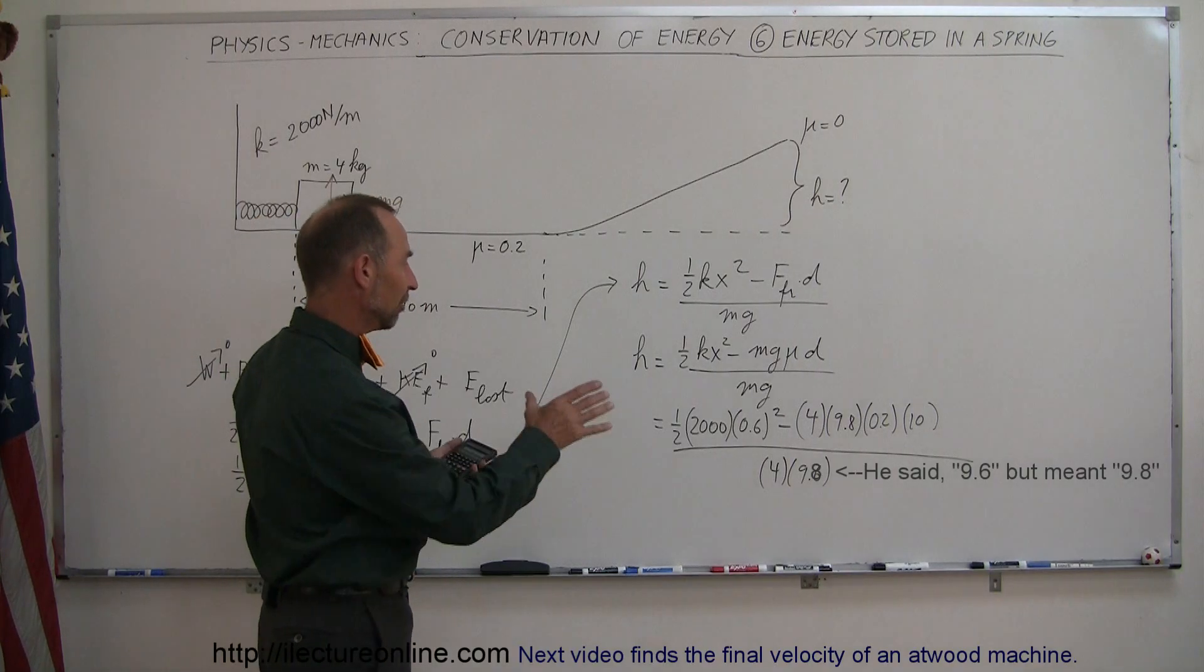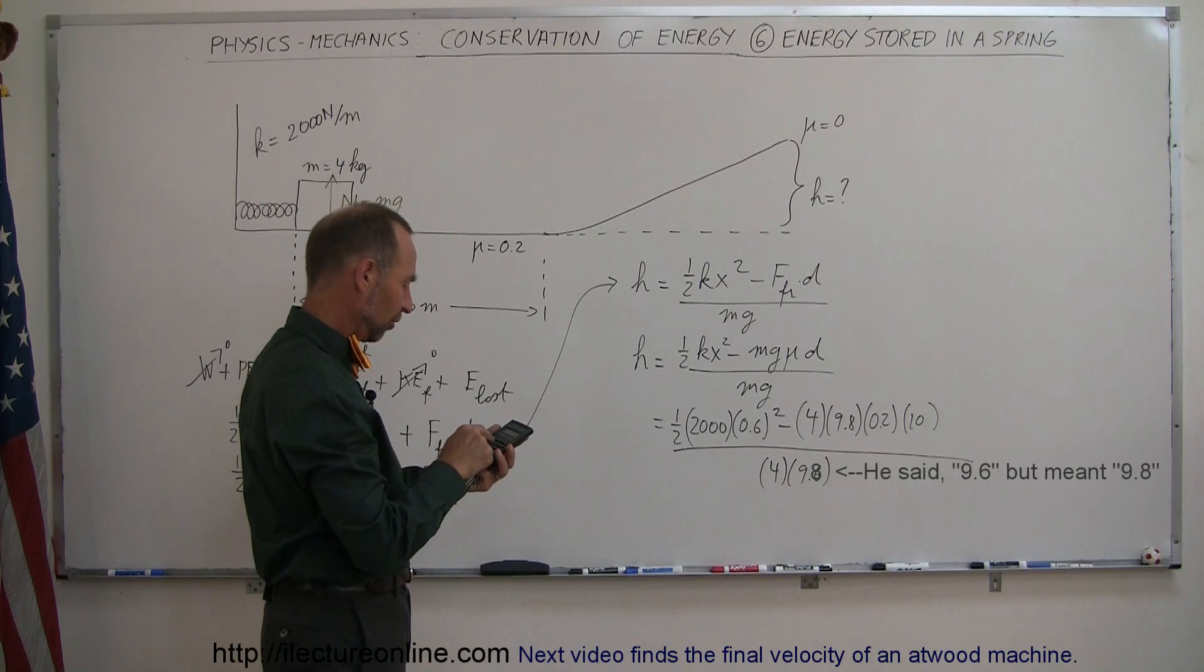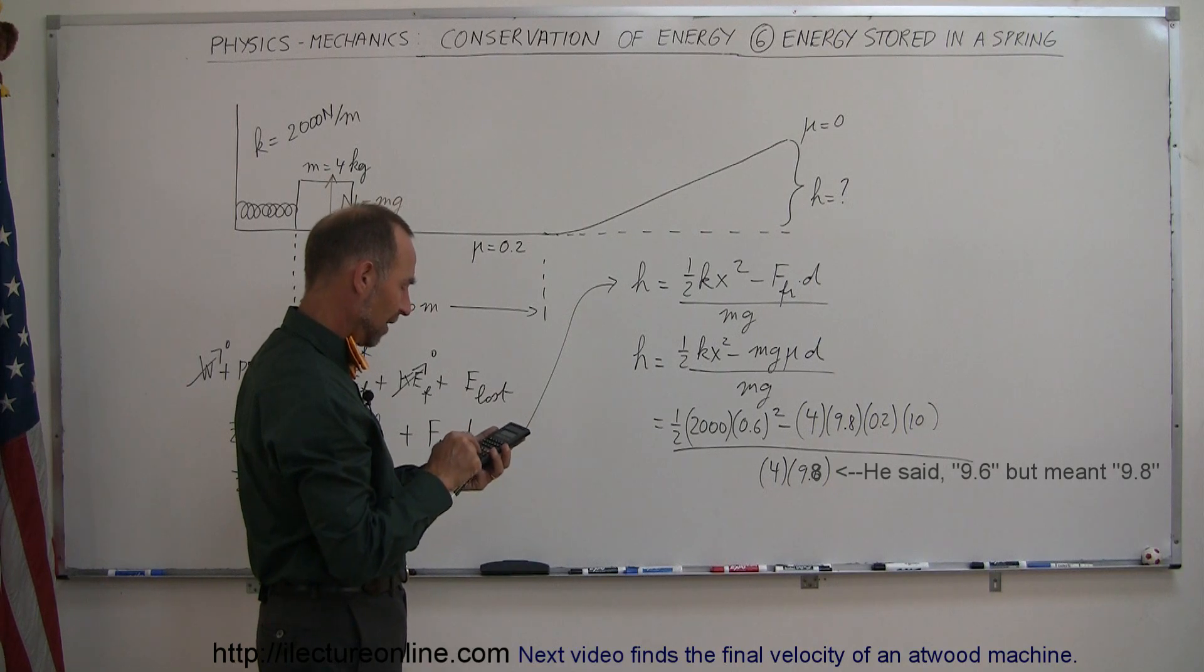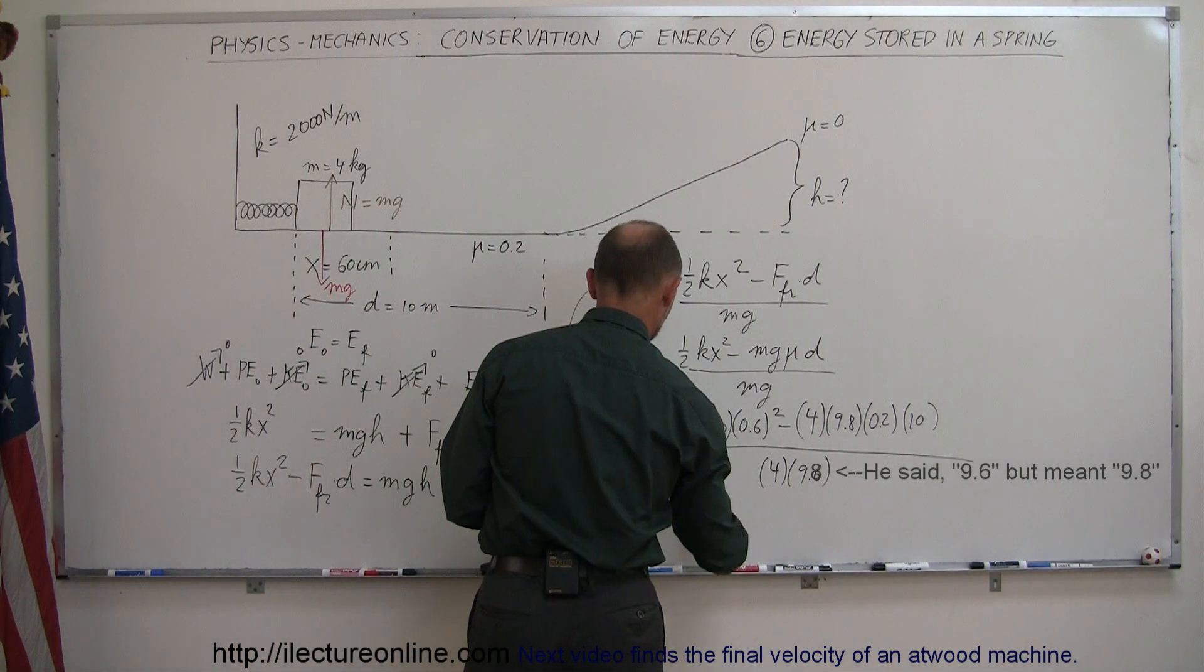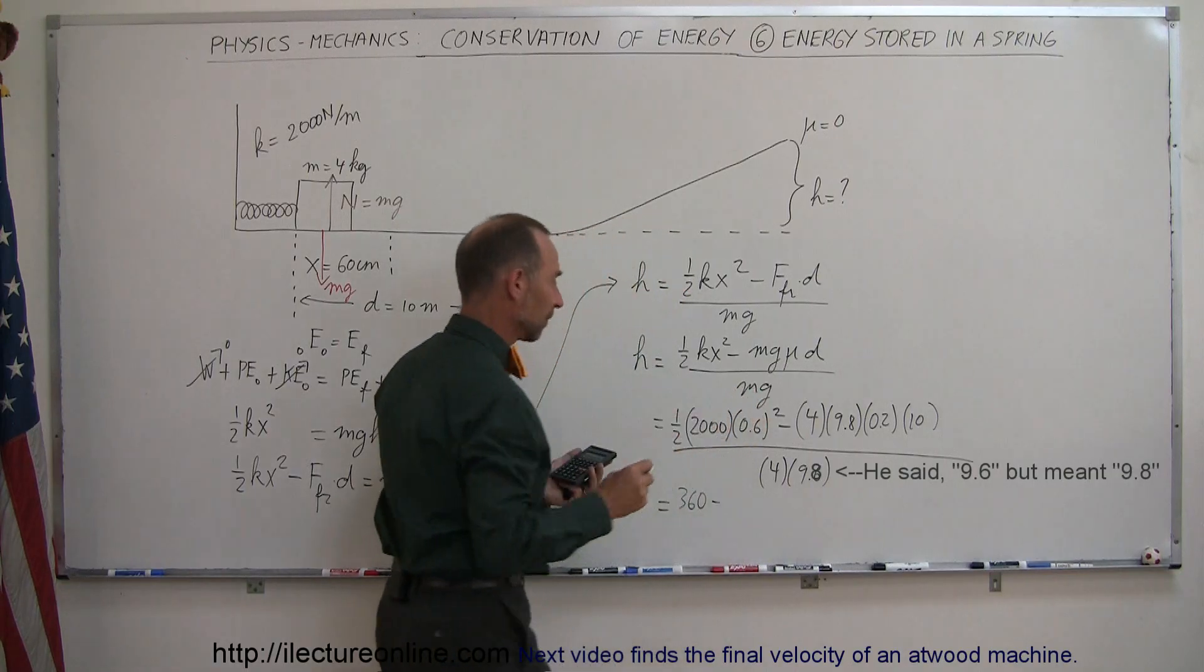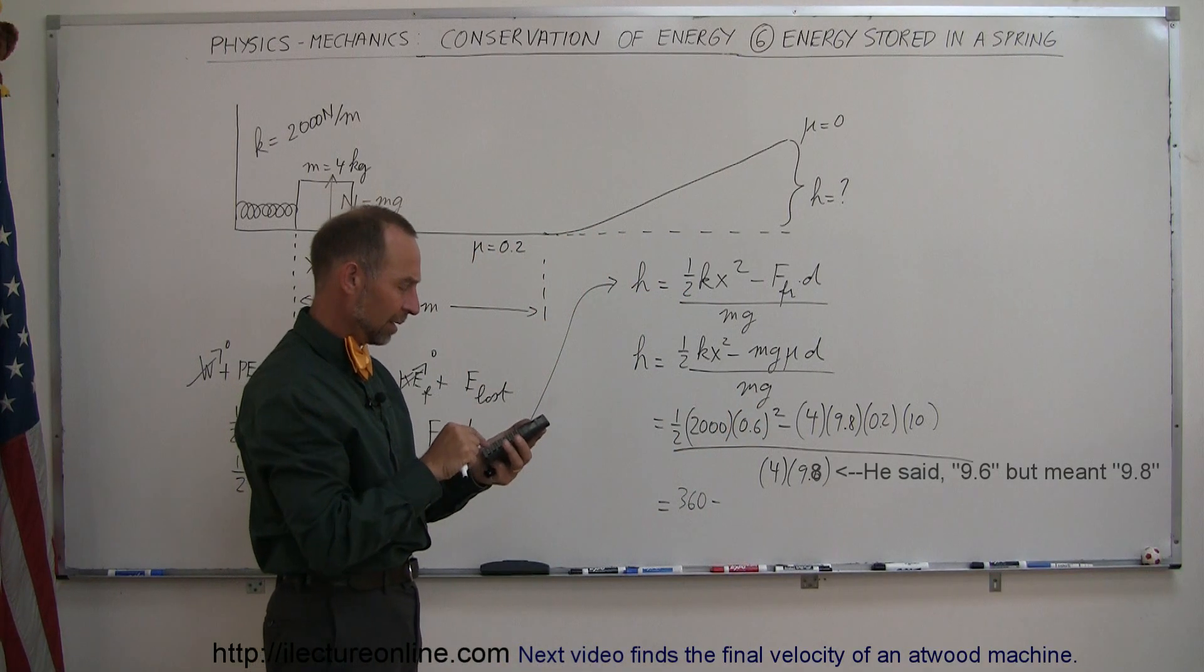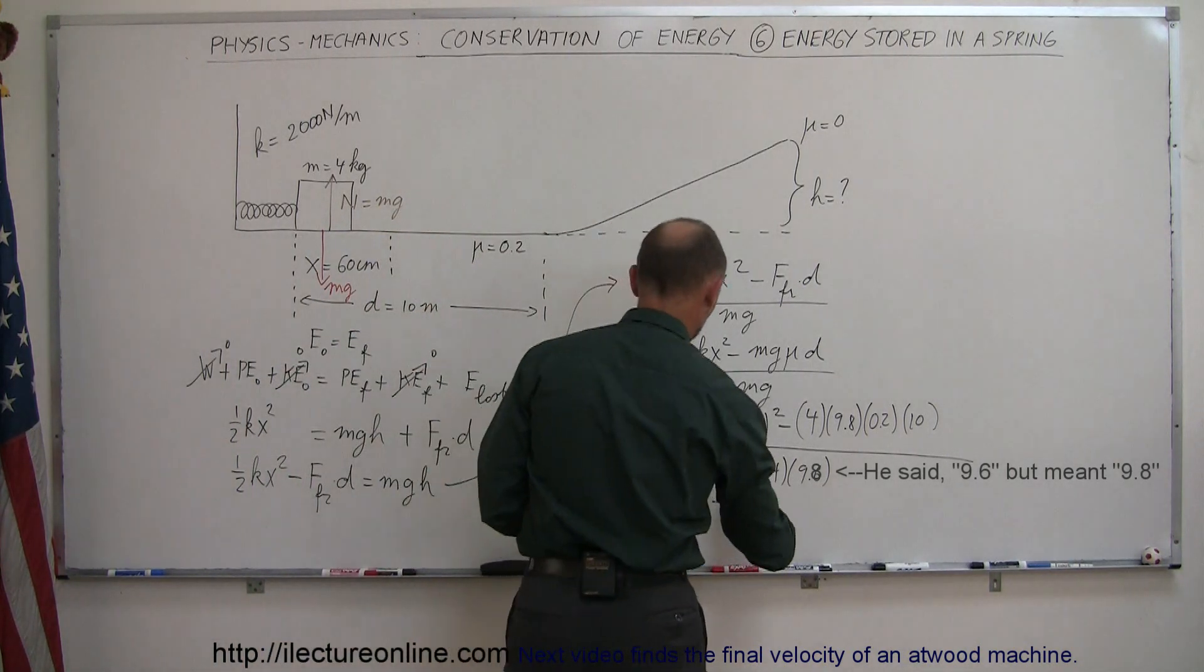Okay, so let's figure out the two things at the top separately. So we have 0.6 squared times 2,000 divided by 2. So it gives us 360. So this equals 360 minus. So we have 4 times 9.8 times 0.2 times 10 equals. That's 78.4.